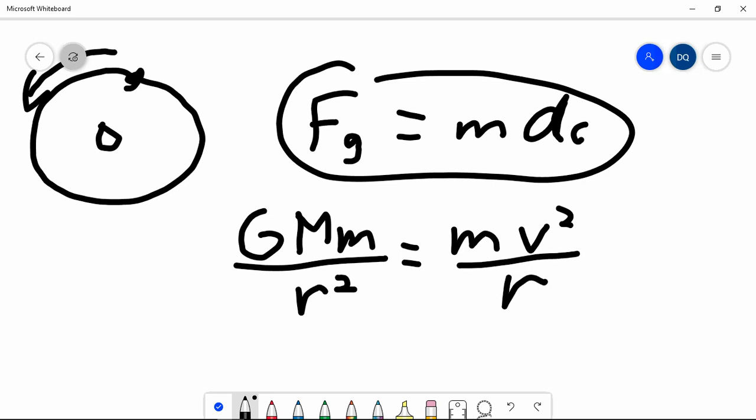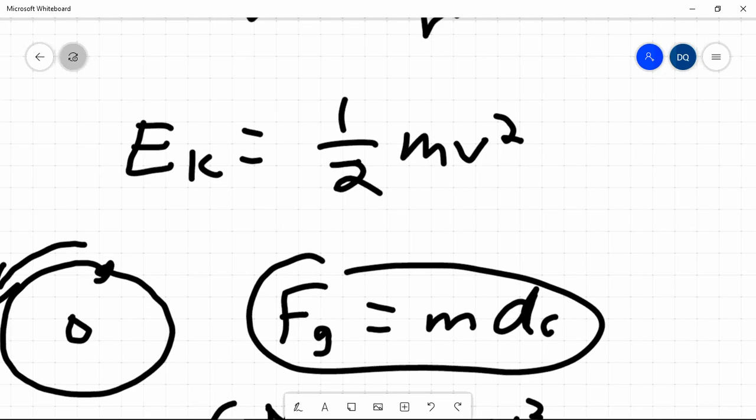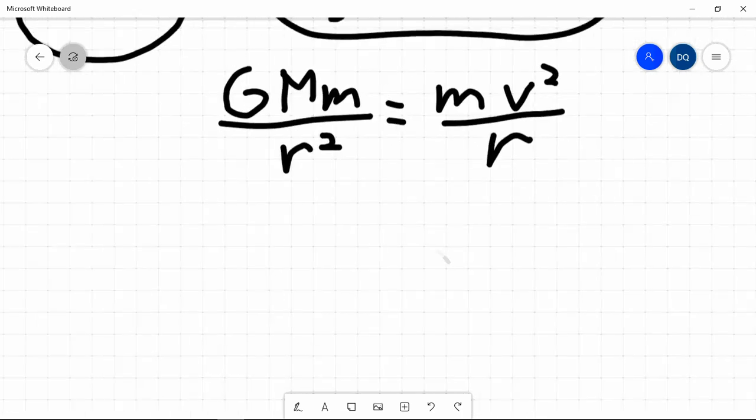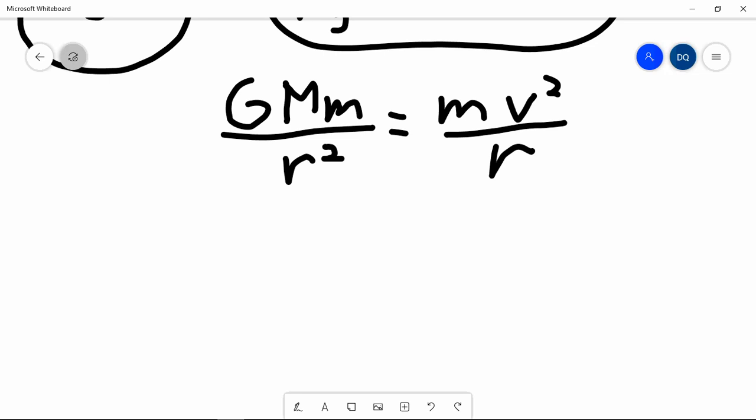And the reason why this is a shortcut is notice we're looking for V squared. And expressed in here, we have V squared, so we're just going to do a little bit of rearranging. First off, we can cancel that R with one of those R's. We can cancel the M's. So we're left with V squared is equal to GM over R.